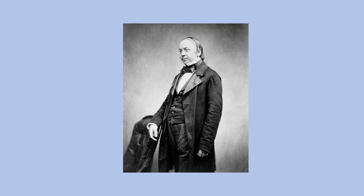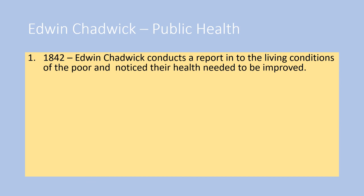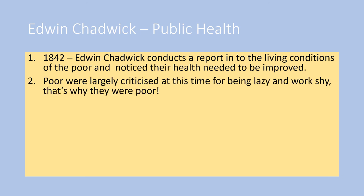We're going to look more at how the government was becoming aware of problems with public health and the poor. In 1842, Edwin Chadwick — who worked for the government — conducted a report into the living conditions of the poor and noted that their health needed to be improved. He makes suggestions about what can be done, but he was talking to a brick wall in a way, because the poor were criticised for being lazy and work-shy at this time.